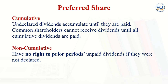Cumulative means undeclared dividends accumulate until they are paid. If a dividend for one year or any year is not declared, it will be accumulated and added until paid. The company may not declare any dividend for two or three years, but those dividends will accumulate as a total. The moment the company declares a dividend, that total accumulated amount will be given to the cumulative preferred shareholders. Common shareholders cannot receive dividends until all cumulative dividends are paid.